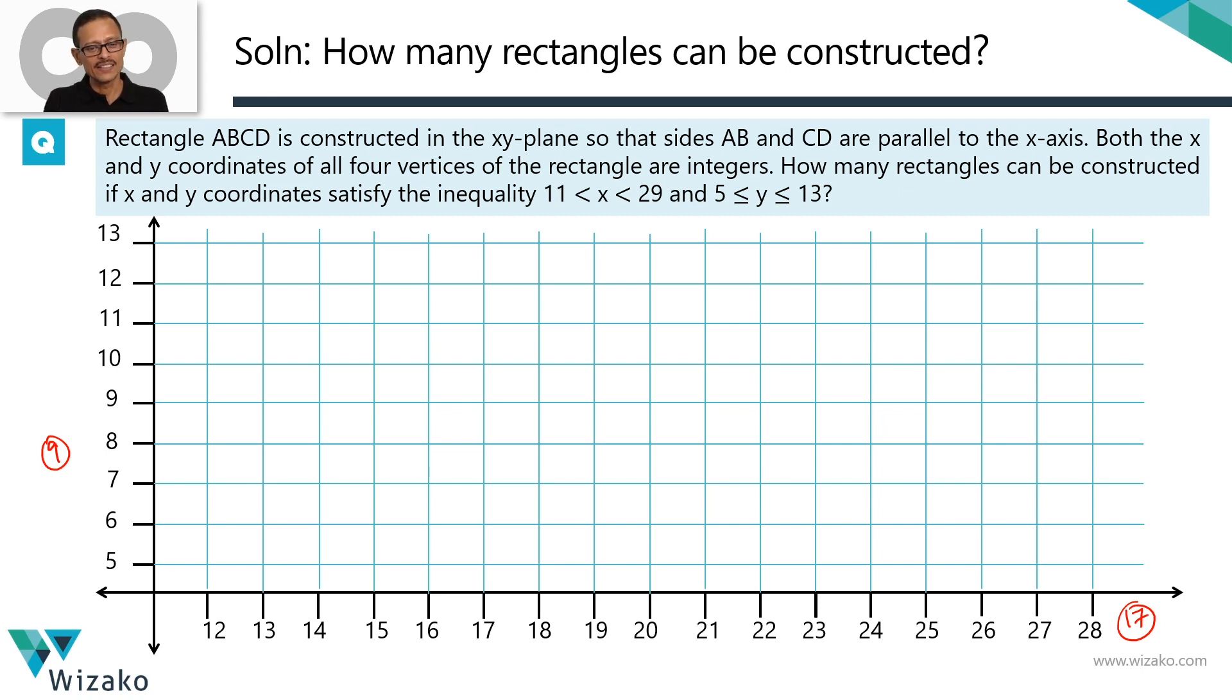How do I get a rectangle? First temptation is to say, pick four points. 1, 2, 3, 4. Where the intersection of these grid lines are and just complete them, you're going to get a rectangle. So obvious temptation, what could be the methodology? Look at how many such intersection points are there. We have 17 vertical lines. We have 9 horizontal lines.